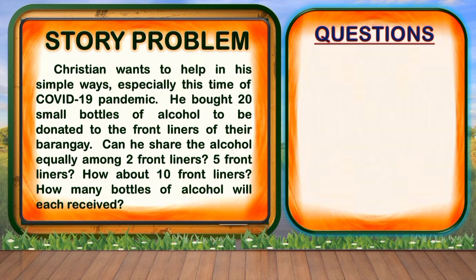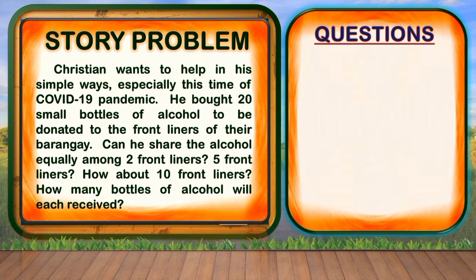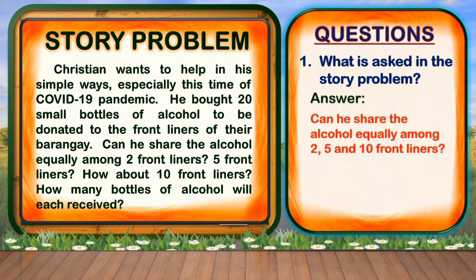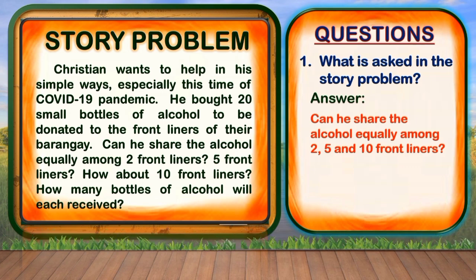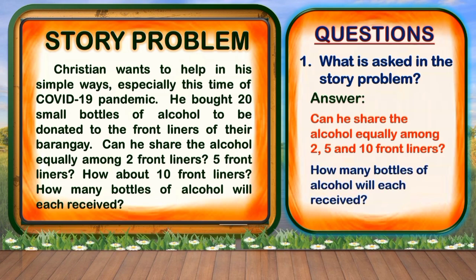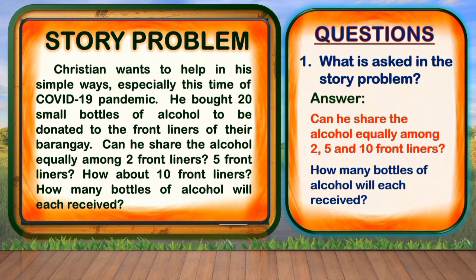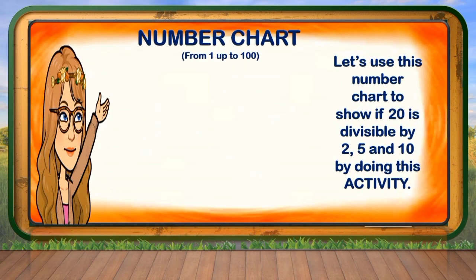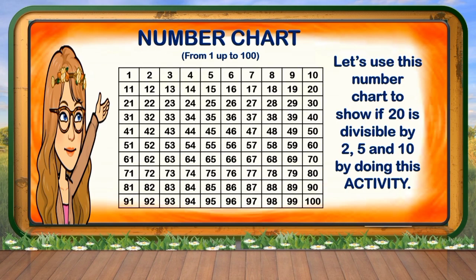All right, let us answer the question for this word problem. Children, what do you think the problem is asking for? Very good — the problem is asking if he can share the alcohol equally among 2, 5, and 10 frontliners, and also how many bottles of alcohol will each receive. Let us use a number chart from 1 up to 100 to show if 20 is divisible by 2, 5, and 10 by doing this activity.